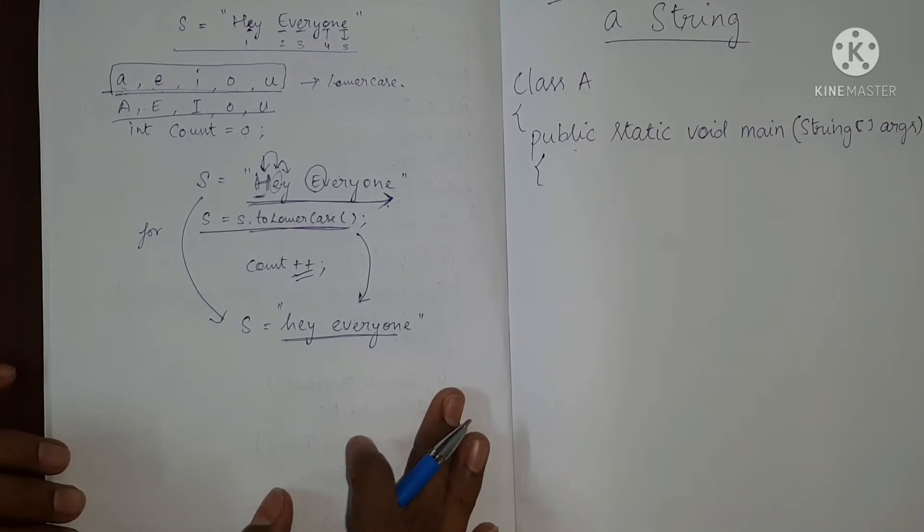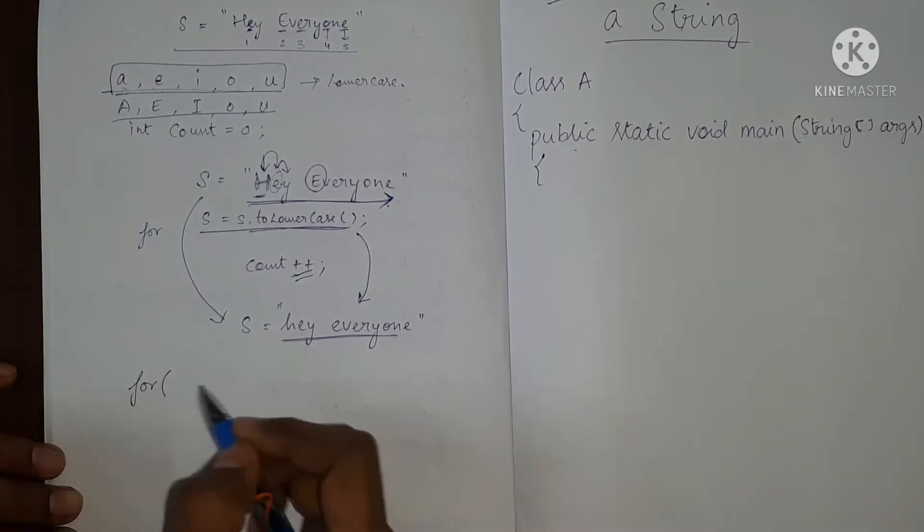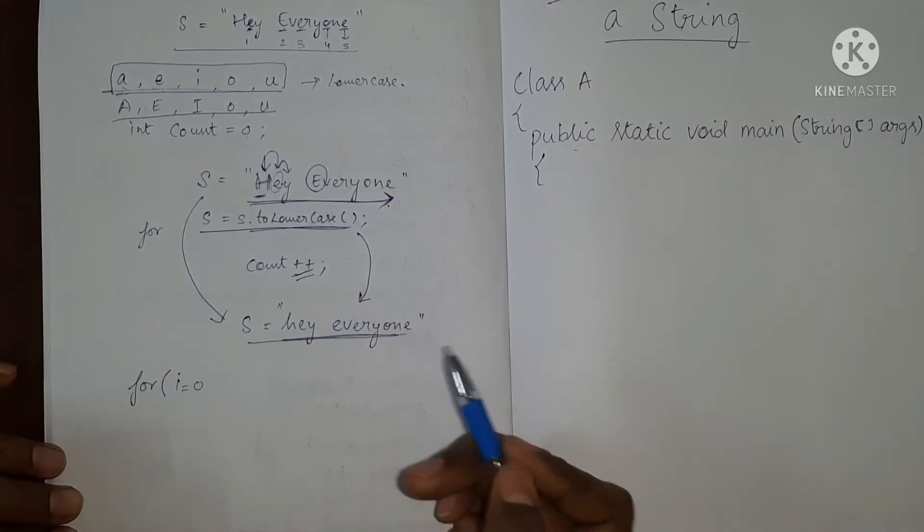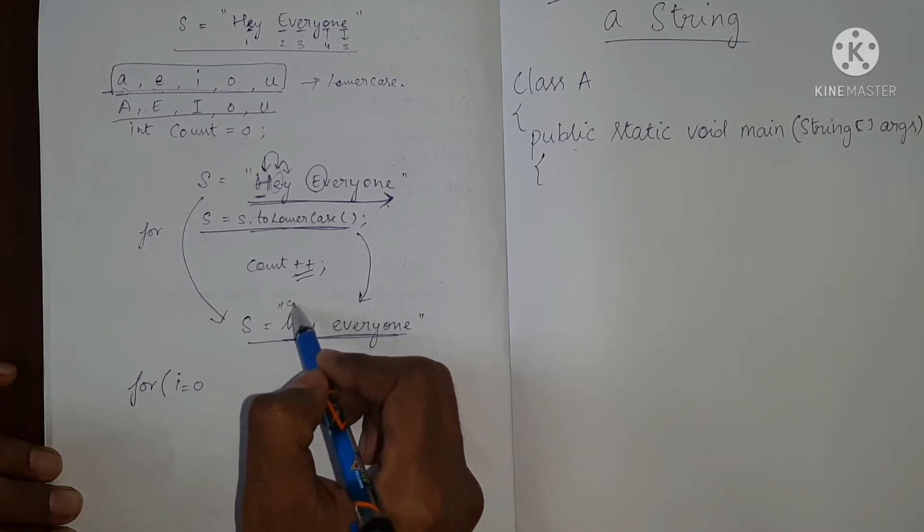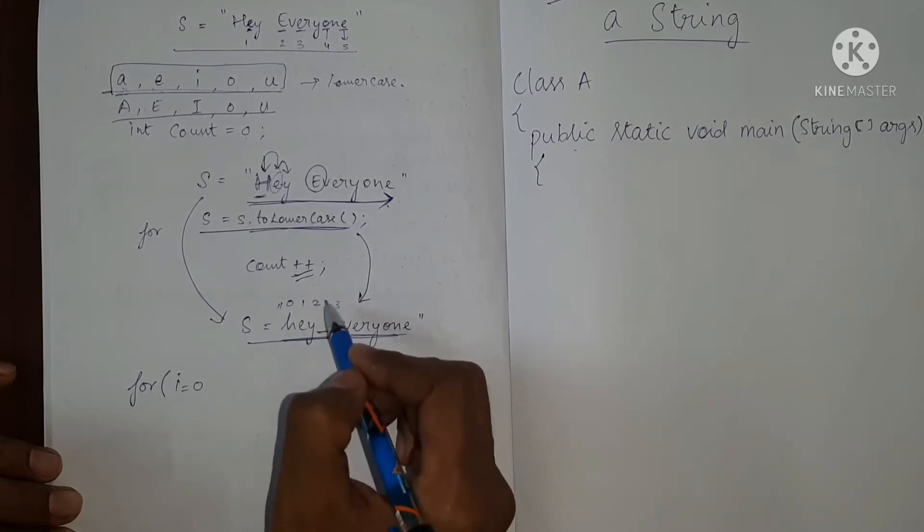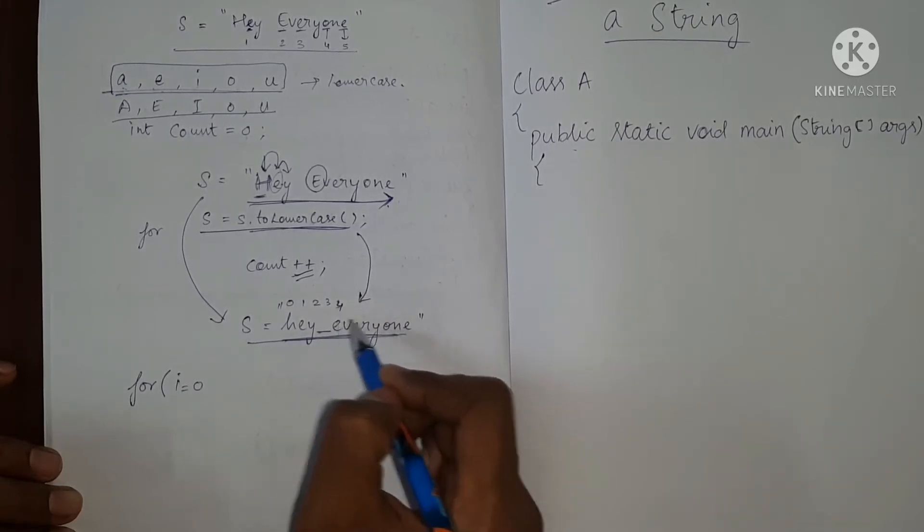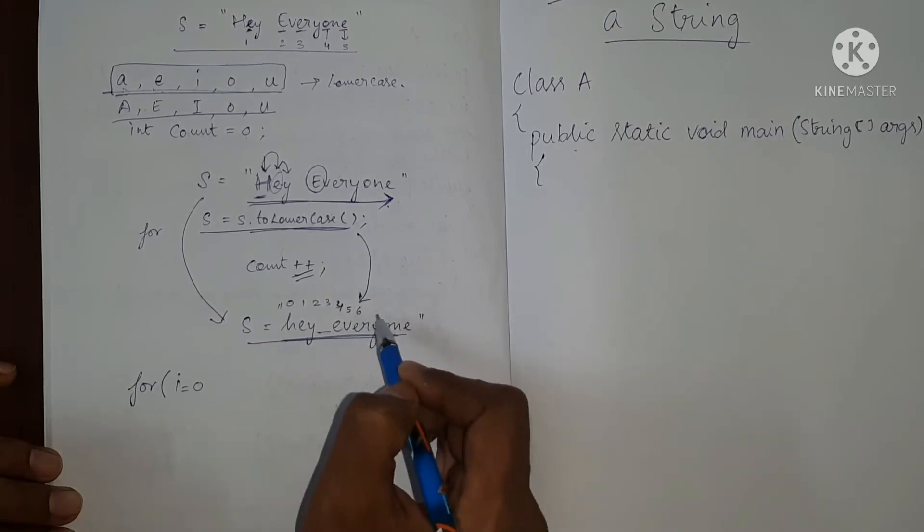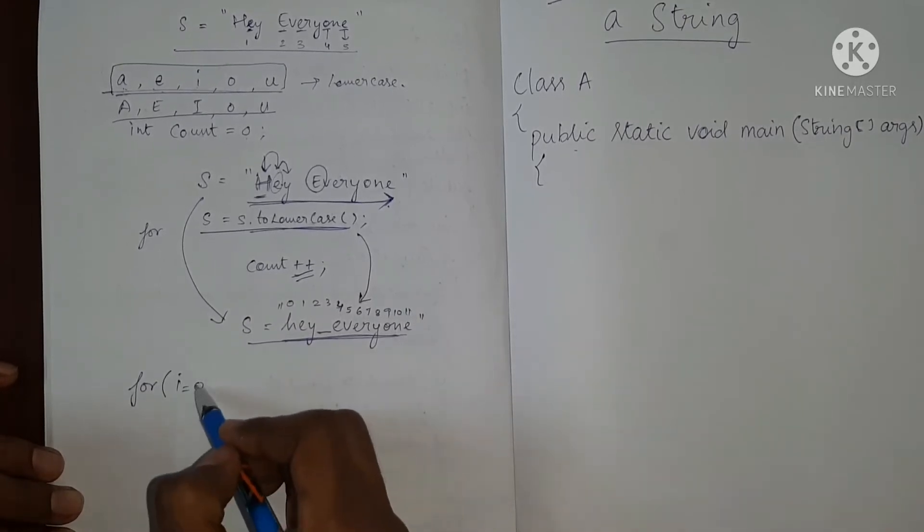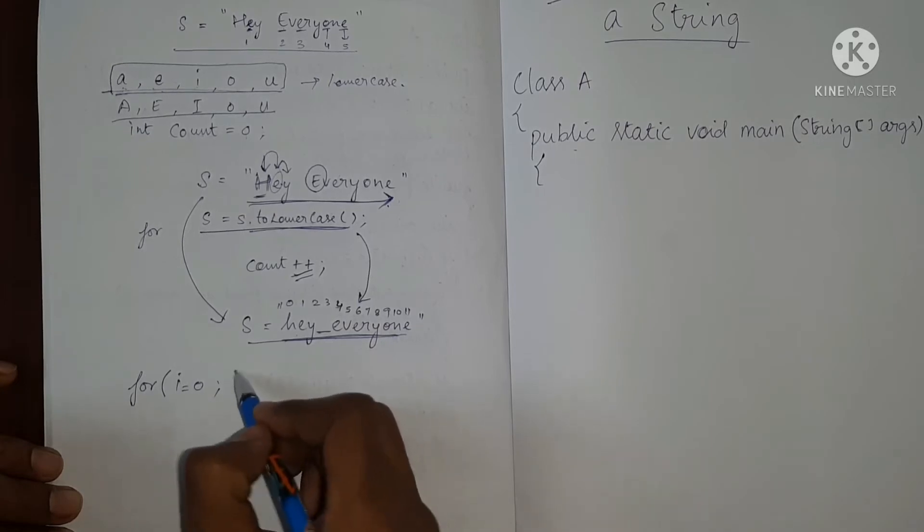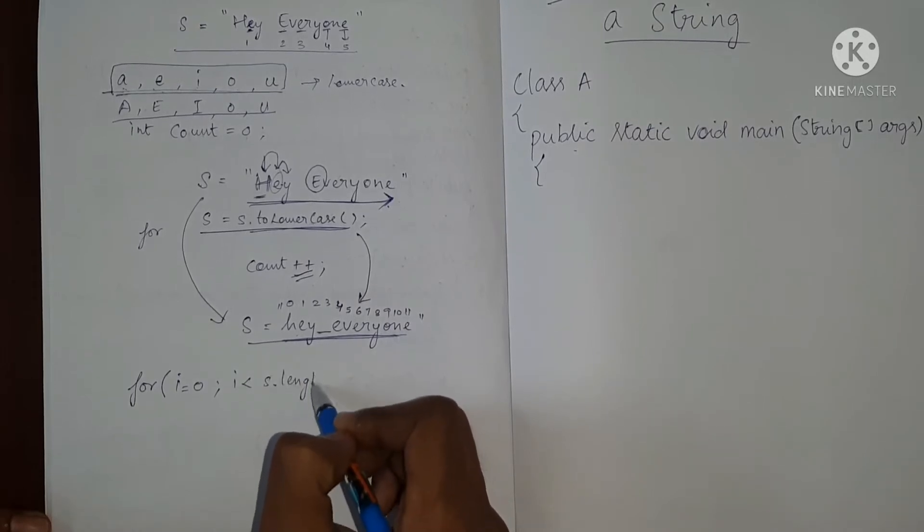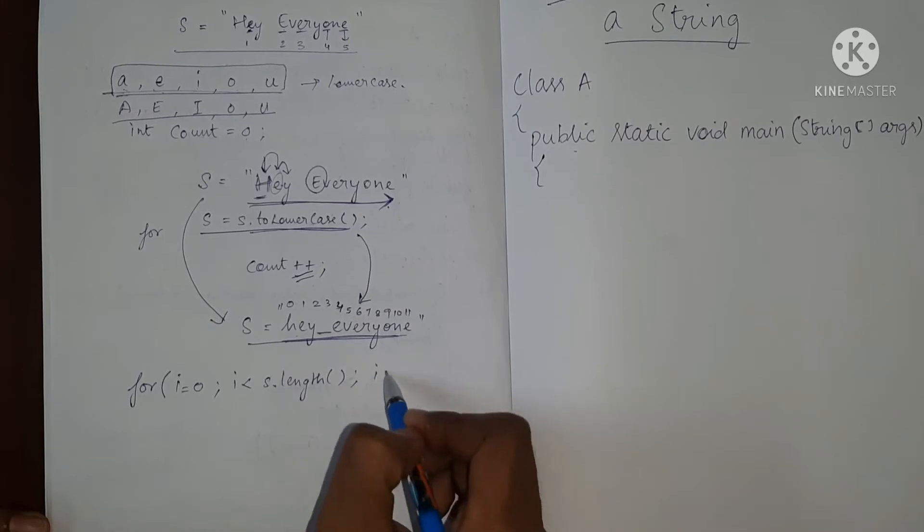So let me write the for loop for you. So we will have a for loop and it will start from I equal to zero. Since this is a string, it has index number for each character. This is index number 0, 1, 2, 3, so if you have a space over here, that will be 3, this E is 4, this is 5, 6, 7, 8, 9, 10 and 11. So I will start from 0th index.